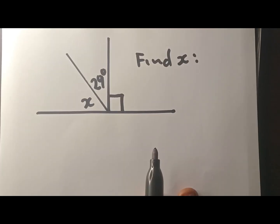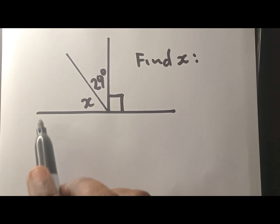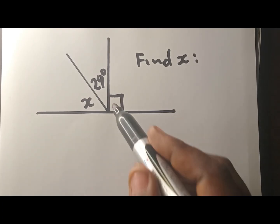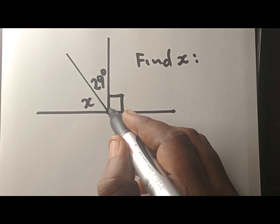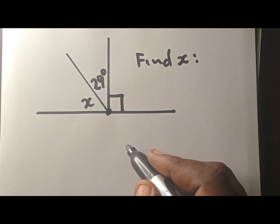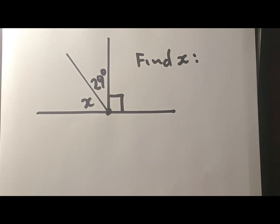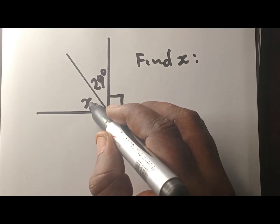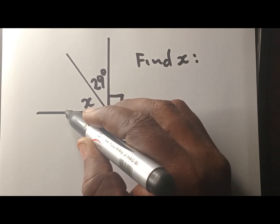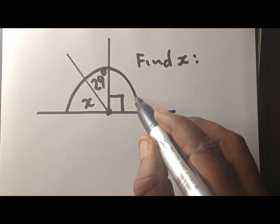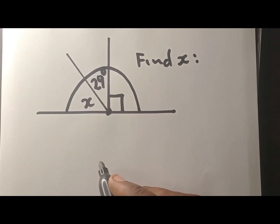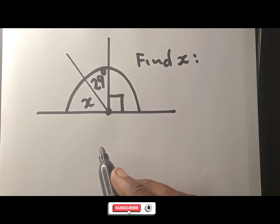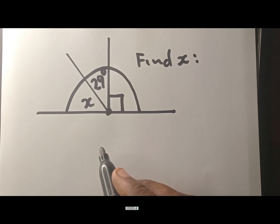What about this one? Find X. As you can see, we have this straight line, and all these angles are formed at the same point. So you have a right to say that this angle plus this angle plus this angle — they are angles on the same straight line. Remember the fact: angles on a straight line add up to 180.